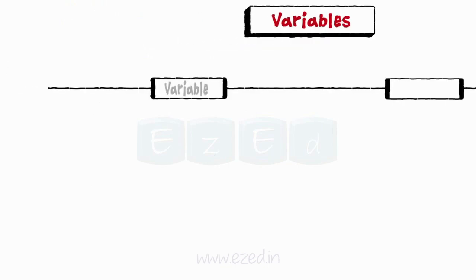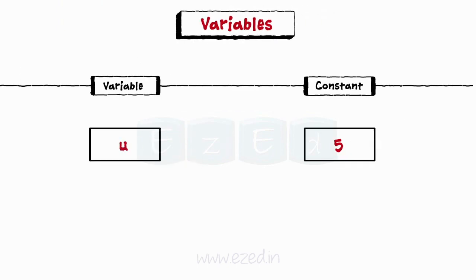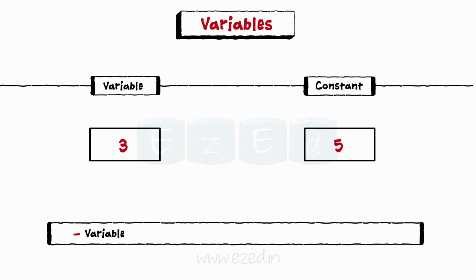Variables. A variable is basically a data name that is used to store values. Unlike constants that remain unchanged during the program execution, a variable can take up several values during the program execution. Variables have the same naming rules as that of identifiers.